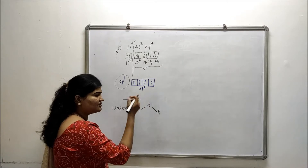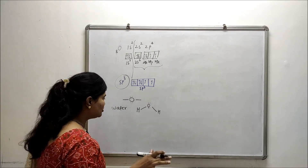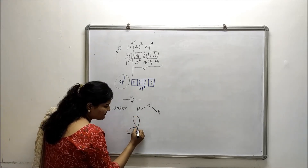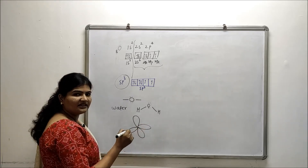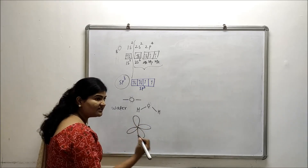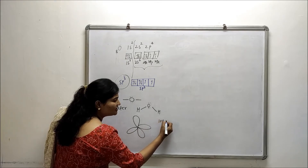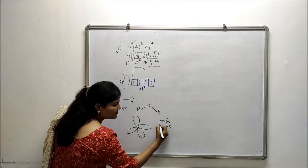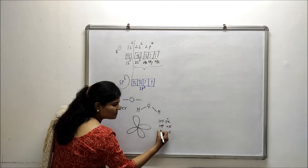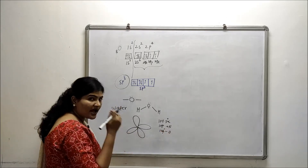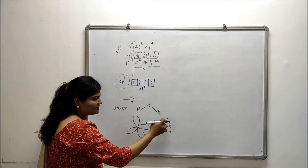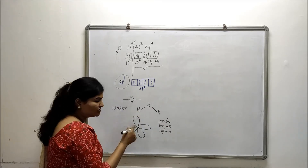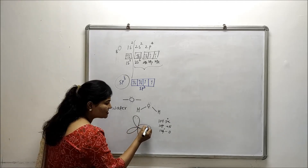Since there are four sp3 hybrid orbitals, the geometry is regular tetrahedral. For carbon, the regular tetrahedral geometry gives a bond angle of 109.5 degrees. For nitrogen the bond angle is 107 degrees, and for oxygen the bond angle is 104 degrees.